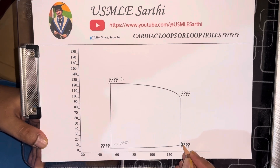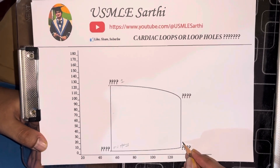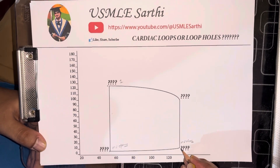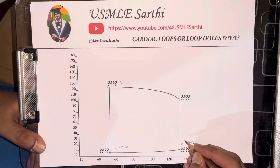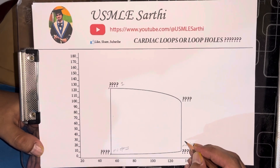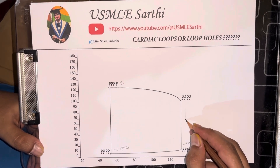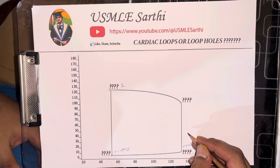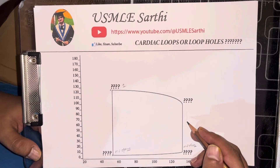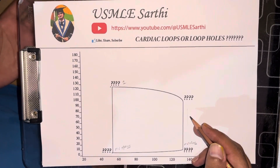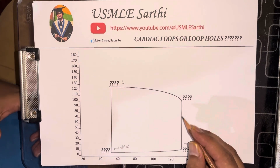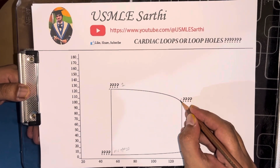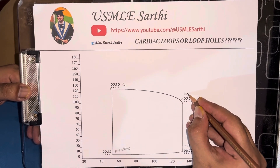At this point your mitral valve closes. From here your left ventricle will start to contract, and this whole portion will be isovolumetric contraction. Isovolumetric means your pressure will increase and your left ventricle muscle will contract, but there will be no change in volume. At this point, the aortic valve opens.